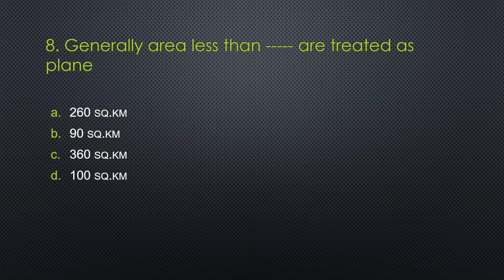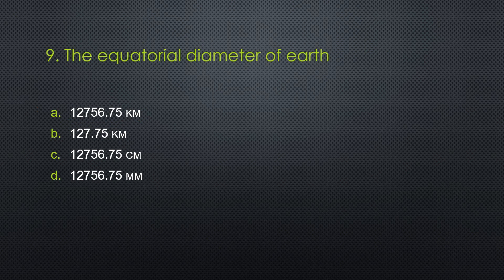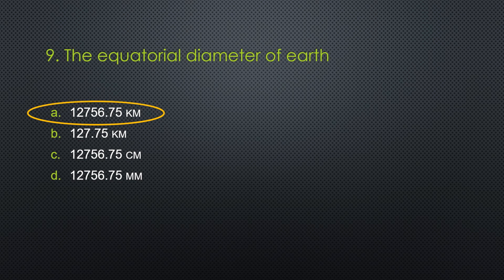The answer is all of the above. Eighth question. Generally, areas less than blank are treated as plain. Option A: 260 km². Option B: 90 km². Option C: 360 km². Option D: 100 km². The correct answer is Option A. The polar diameter of the earth is 12,713.80 km.